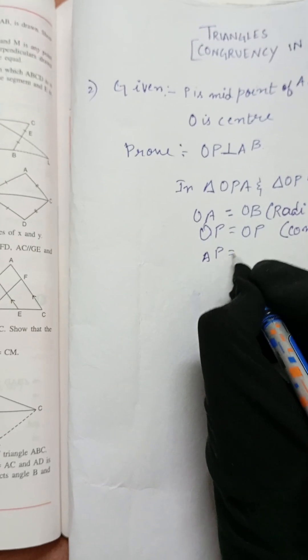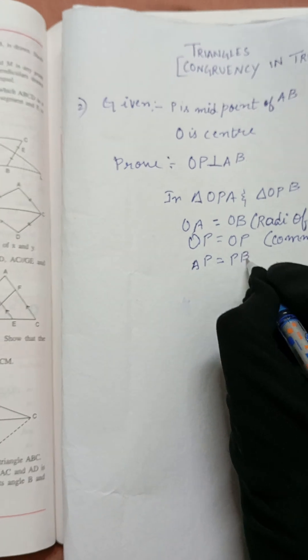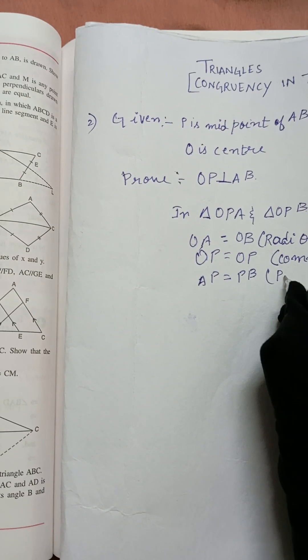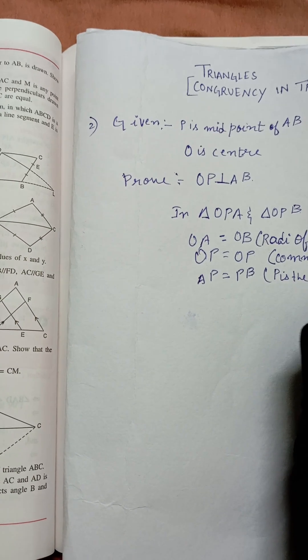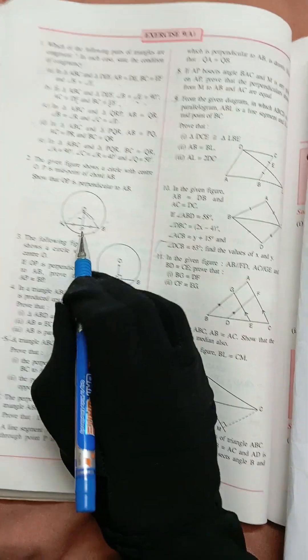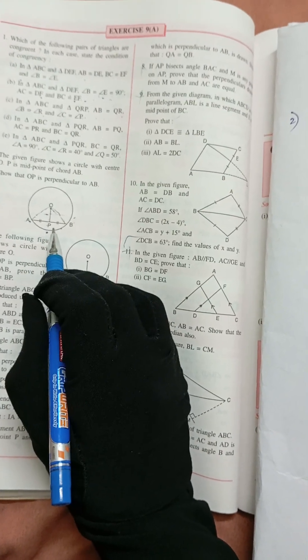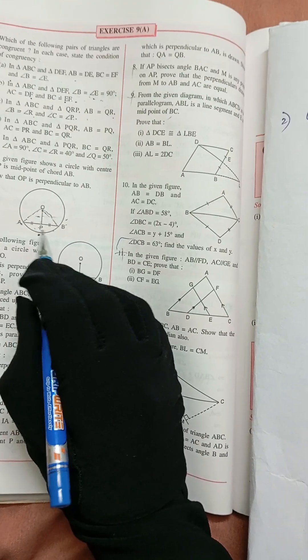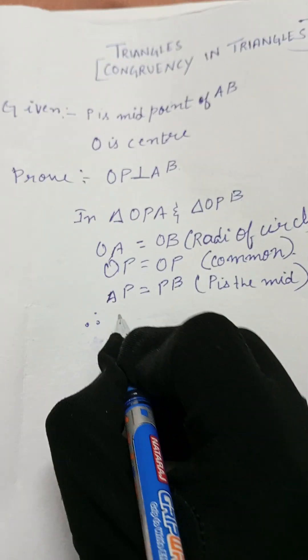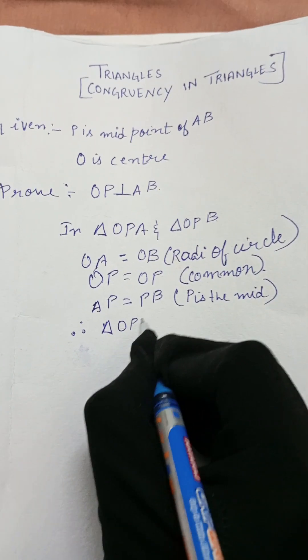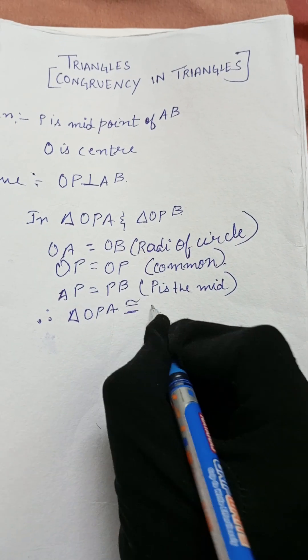Next, AP is equal to PB because P is the midpoint of AB. Both sides are equal in measurement. Therefore, triangle OPA is congruent to triangle OPB.